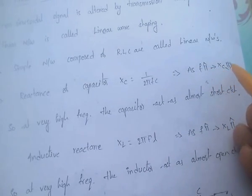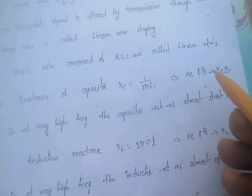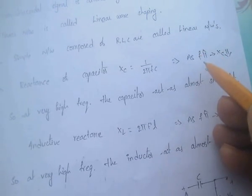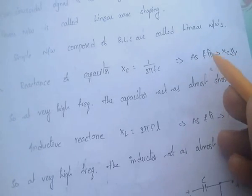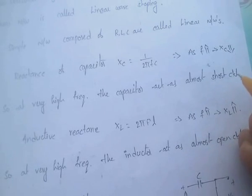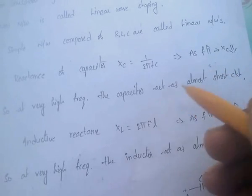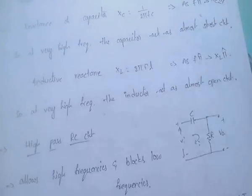As frequency is very high, the Xc value will be very low, because both are inversely proportional. At very high frequencies, the capacitor acts as a short circuit because the capacitive reactance will be very low. This is a very important point.